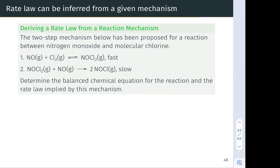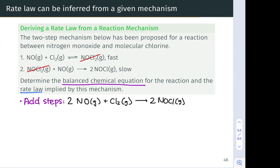In this practice problem, we're asked to derive the overall balanced chemical equation and the rate law implied by a given mechanism. To determine the balanced chemical equation, the sum of the mechanistic steps must add up to the overall balanced equation. Adding step one and step two, we notice that NOCl2 appears on the product side in the first step and the reactant side in the second step — it's a reactive intermediate and does not appear in the overall balanced equation, which is: 2 NO + Cl2 → 2 NOCl.